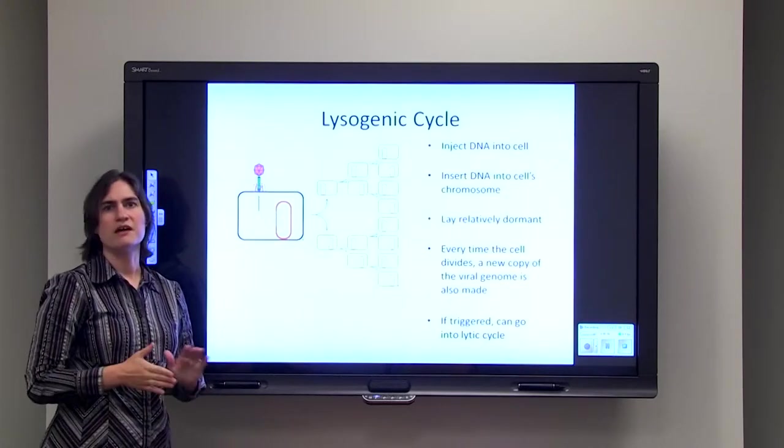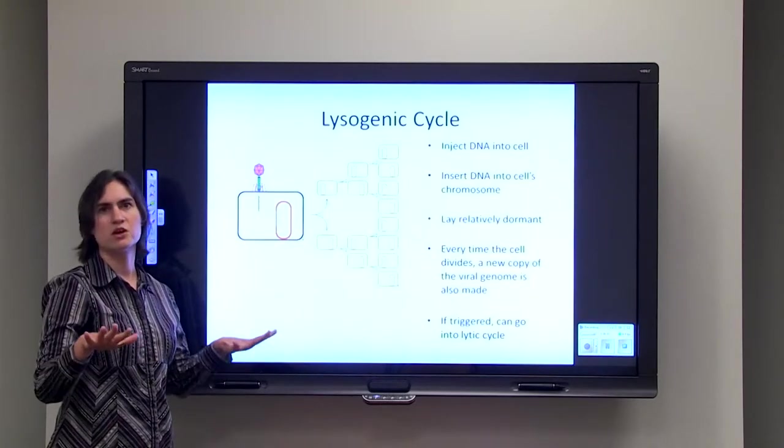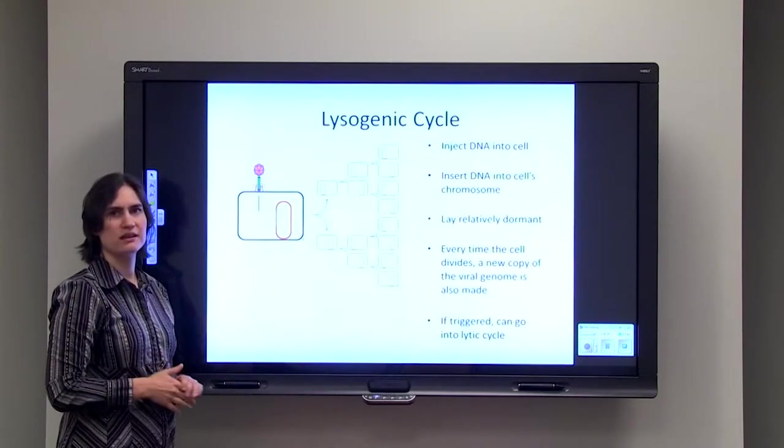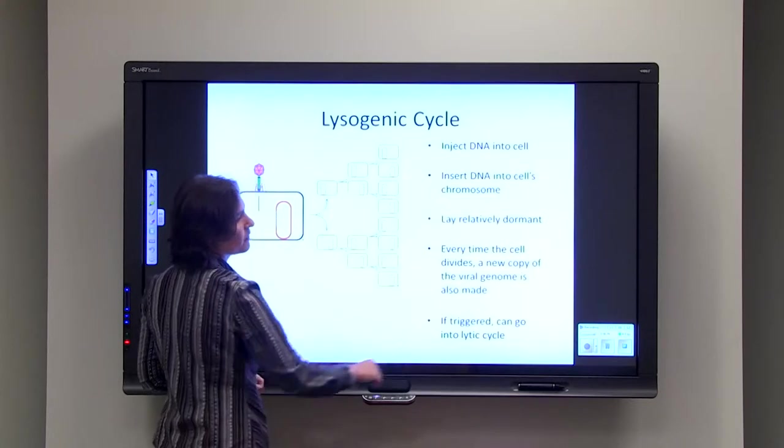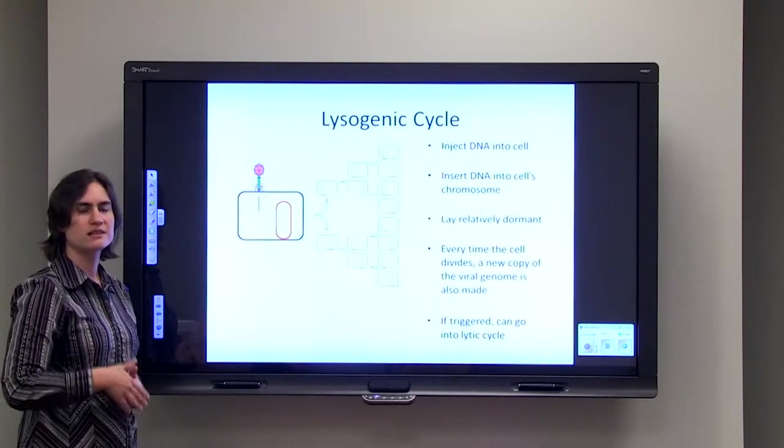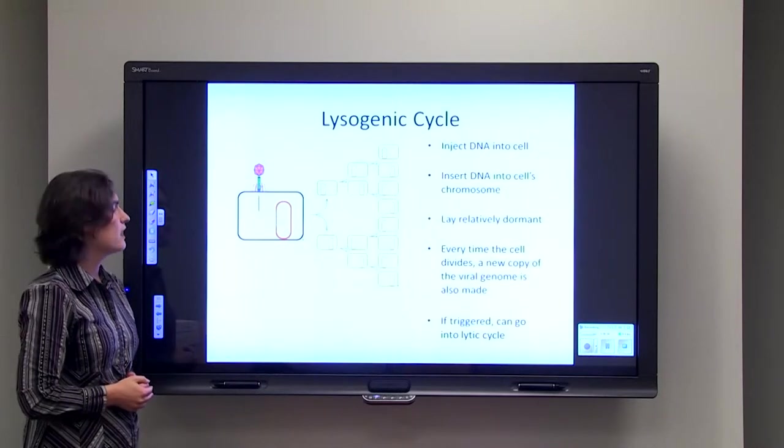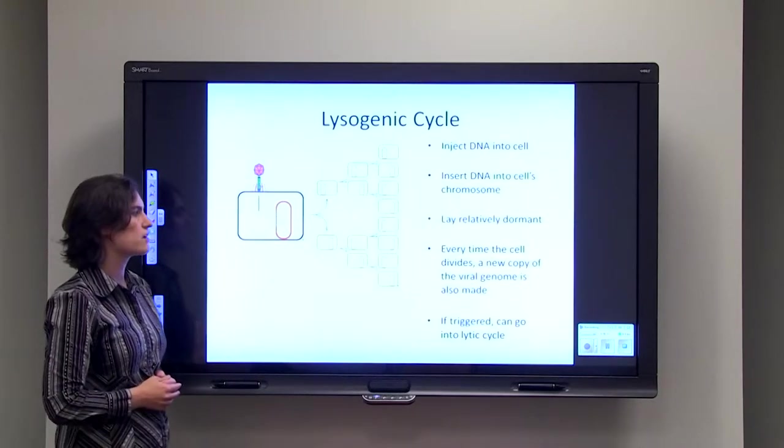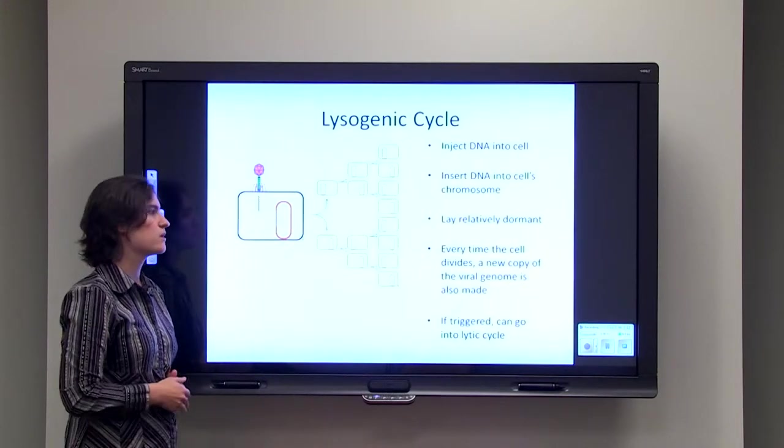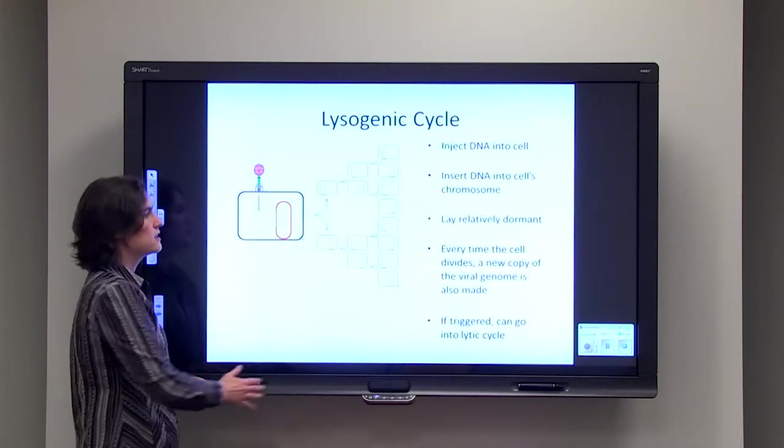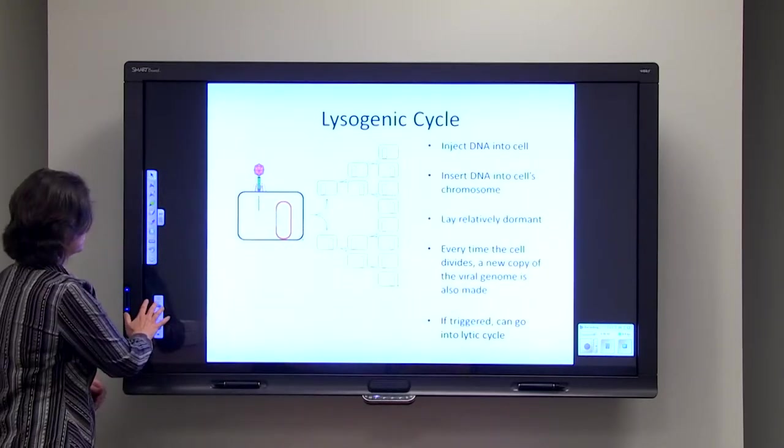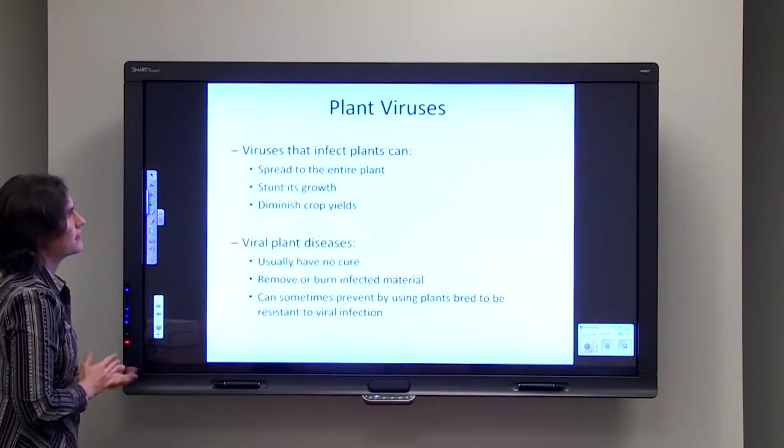In most cases with the lysogenic cycle, the virus kind of lies dormant, not doing very much, but sometimes it can be triggered to go into the lytic cycle. Scientists are still trying to figure out what these triggers are. In some cases it's UV light, maybe from a sunburn. Other cases it might be stress or a lowered immune system or some other chemical trigger to make a lysogenic virus then go into the lytic cycle.